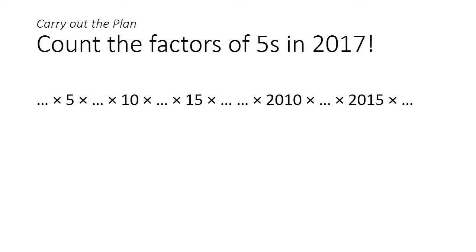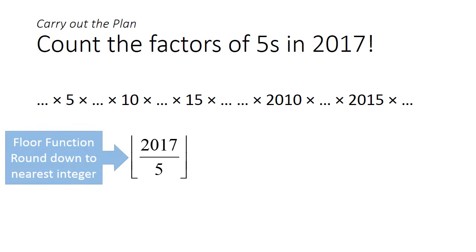So let's carry out the plan. Since there is a multiple of 5 for every 5 numbers, we can just divide 2017 by 5 and round it down. This symbol that I'm using, just in case you are not familiar with it, is the floor function, which basically means to round the number down to the nearest integer.